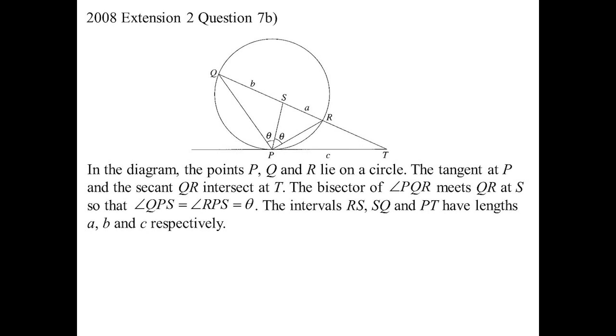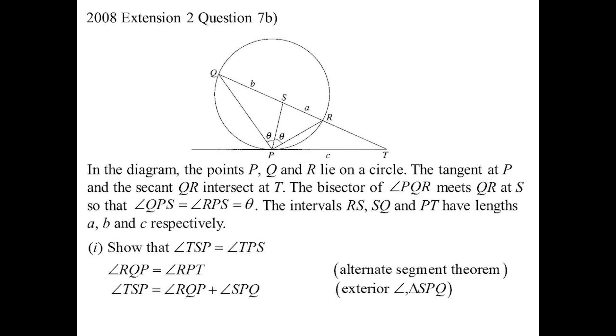Here's the 2008 question. P, Q, and R are all in the circle, PT is a tangent, then we have a secant QT, the bisector of angle PQR. First part: show that angle TPS is the same as angle TSP. I know angle RQP and angle RPT are the same - that's just my classic alternate segment theorem. Whenever I see a tangent in a triangle, alternate segment theorem is probably the first one I'm going to identify. Angle TSP will be angle RQP plus angle SPQ - exterior angle of a triangle.